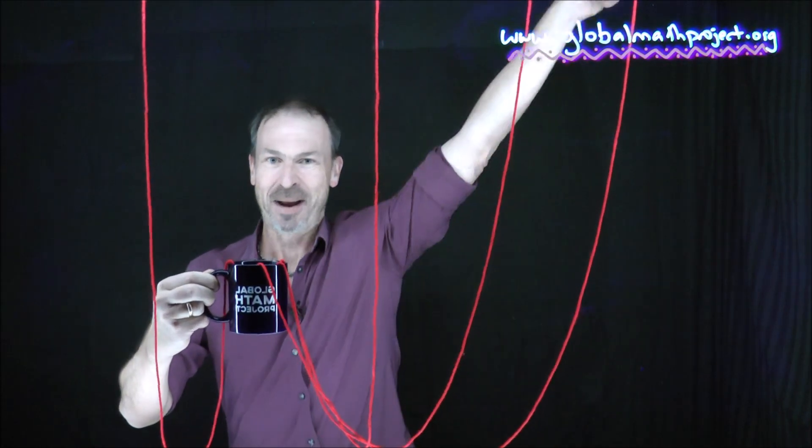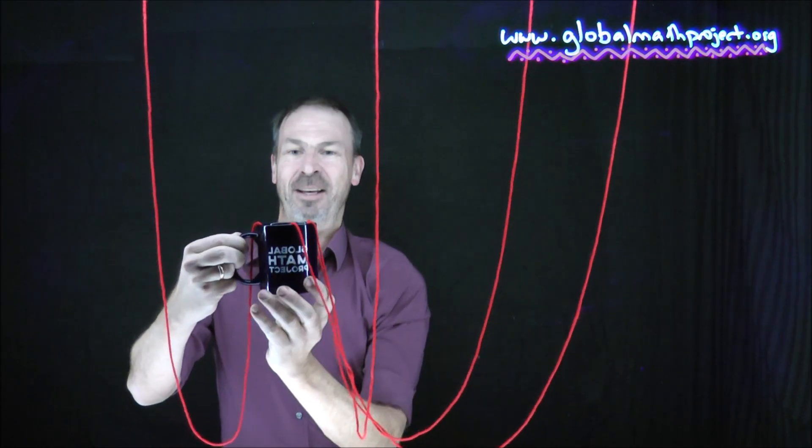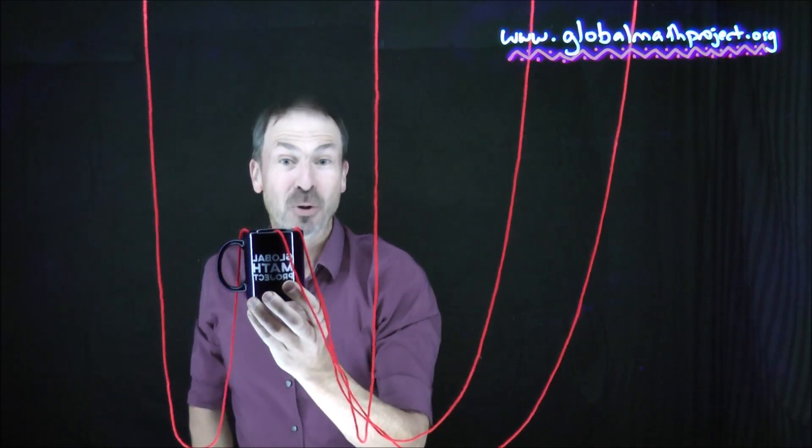So you might actually want to try this. Maybe try it with a paper cup. So if you drop it, it doesn't matter. Tape some strings to a cup. Tape some other ends to different parts of the room. Give the cup one full turn. Tangle those strings. Now can you maneuver the strings around the cup and untangle them? Give it a good try. And when you do it after a while, you might start to get frustrated.